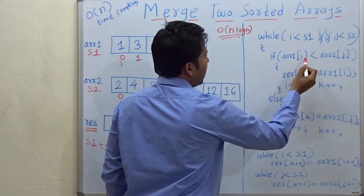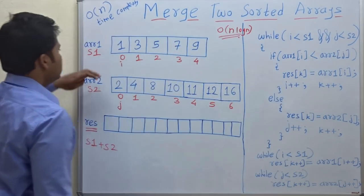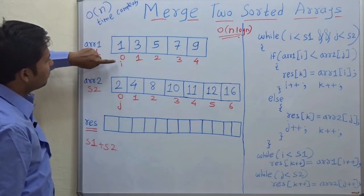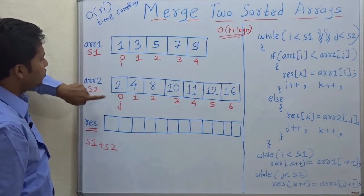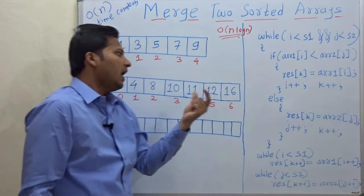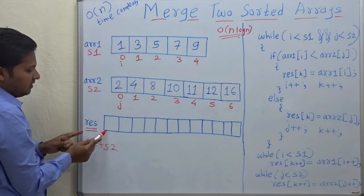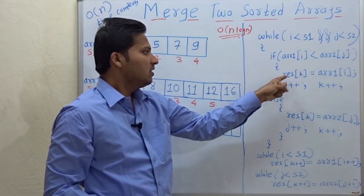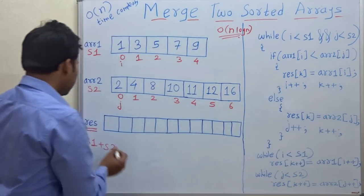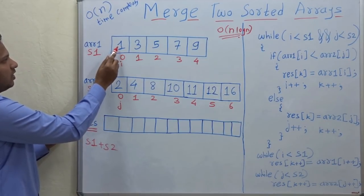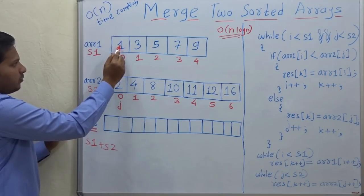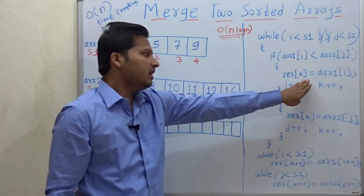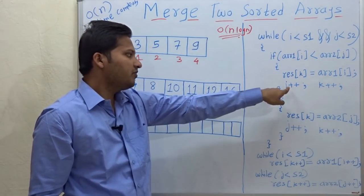Inside the while loop, check if array1[i] is less than array2[j]. At each position, determine which element has the lesser value. The element which is less will go into the resultant array. So if array1[i] is less than array2[j], then result[k] equals array1[i] — in this case, because 1 is less than 2, the element 1 goes to the final array.